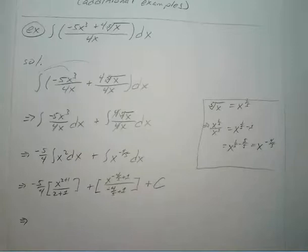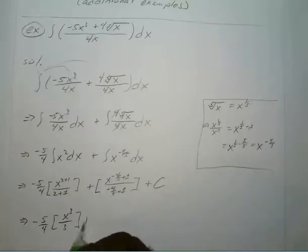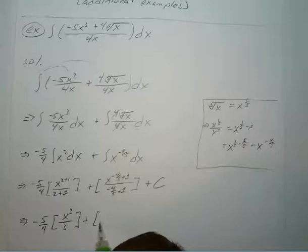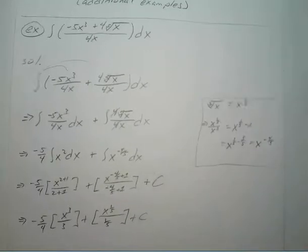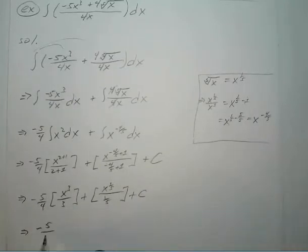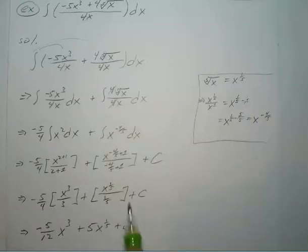So if we simplify further, we have negative 5 over 4 times x to the third over 3 plus c. Simplifying: negative 5 over 12 times x to the third. For the other term, multiplying numerator and denominator gives us 5x to the one-fifth power plus c.